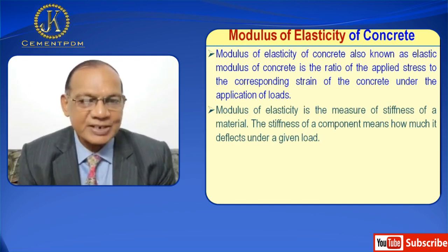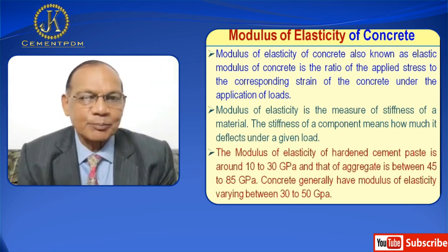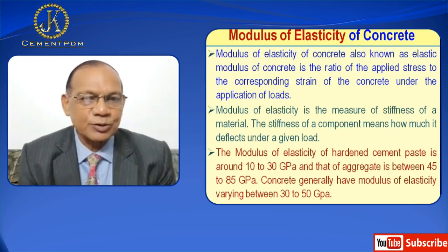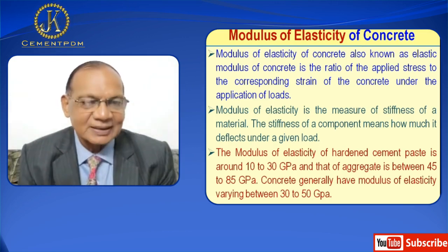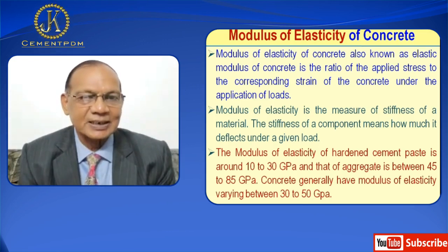The stiffness of a component means how much it deflects under a given load. The modulus of elasticity of hardened cement paste is around 10 to 30 GPa, and that of aggregate is between 45 to 85 GPa. Concrete generally has a modulus of elasticity varying between 30 to 50 GPa.